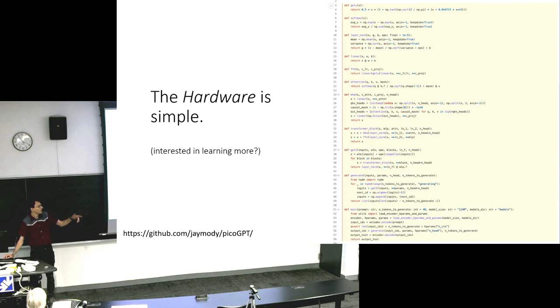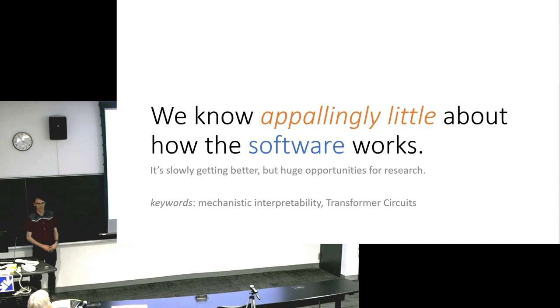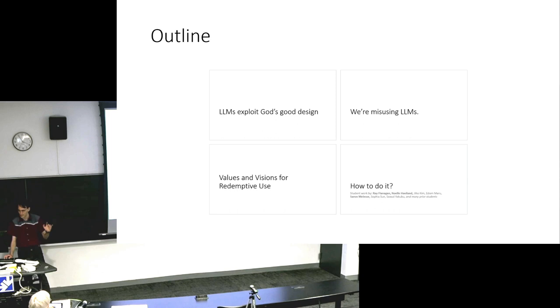You can think of this as a computational architecture. It's running on a computer. Here's the simulator for that computer. It's only like 50, 60 lines of code. I can unpack that for you later if you want. But the idea is that this is just hardware. Where the magic is, if there is any magic, is all in the software. We don't know very much about how the software works. It's slowly getting better, but there's huge opportunities for research here. If you're a student or advising students coming up, interpretability research on these language models is a pretty fruitful area. Not one that I'm in, but I encourage you to go there. So that's the section of just how these things work.